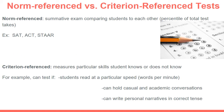Let's also talk about norm reference and criterion reference tests. Norm reference tests compare students to each other and set up a percentile of total test takers. Examples of norm reference tests are SATs, ACTs, and the STAR. These tests have an average score and place students on a percentile compared to how other students performed. Criterion reference tests, on the other hand, do not compare students directly.